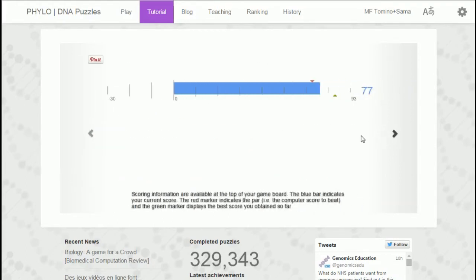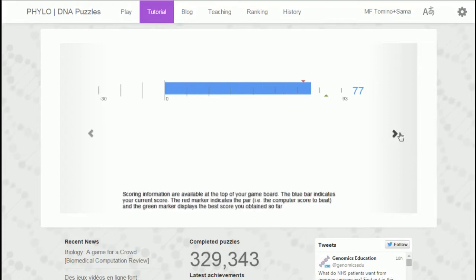So replayability. Scoring information are available at the top of the game board. Blue bar indicates your current score. Red marker indicates the par. And the green marker indicates your current best.